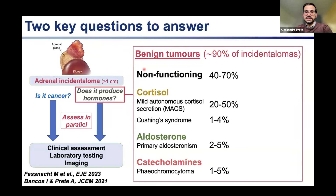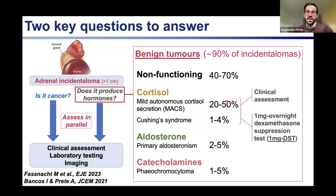Today most of my talk will focus on how to assess whether a tumor is producing hormones in excess, focusing on benign adrenal tumors, which constitute the vast majority of incidentalomas. With regards to hormone excess, cortisol excess is by far the most common abnormality. Mild autonomous cortisol secretion, or MACS, has been found in 20 to 50% of cases, followed by Cushing's syndrome. The distinction between these two entities relies on clinical assessment for signs of cortisol excess and failure to suppress cortisol during the 1 mg overnight dexamethasone suppression test. Benign adrenal tumors can also produce aldosterone — primary aldosteronism — and more rarely catecholamines, i.e. pheochromocytomas.